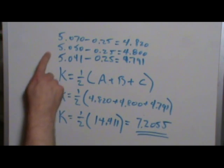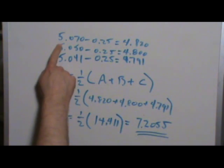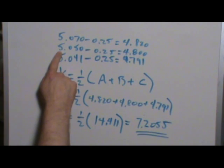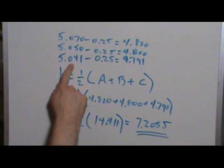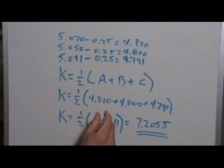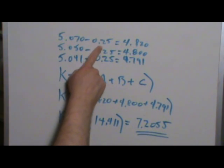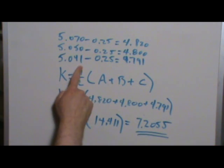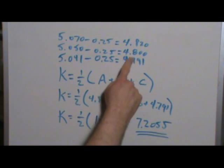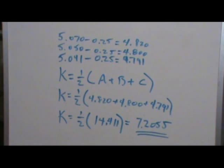First thing I did, I wrote down my three measurements of the distance to the outside of the ball feet. It was 5.070 inches, 5.050, and 5.041. My little balls on the end of the ball feet are a quarter of an inch, so all I have to do is subtract a quarter of an inch from each of these readings, and that gives me the distance between the centers of each of the balls.